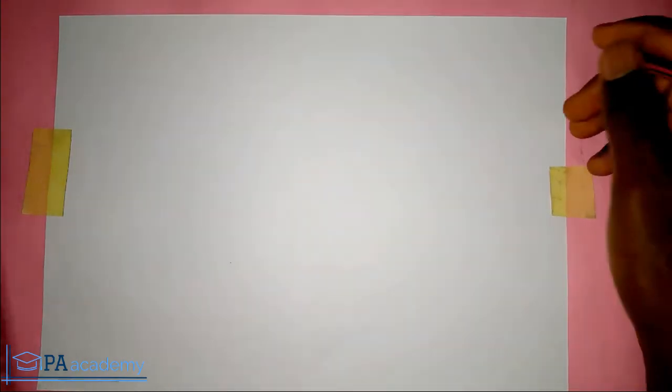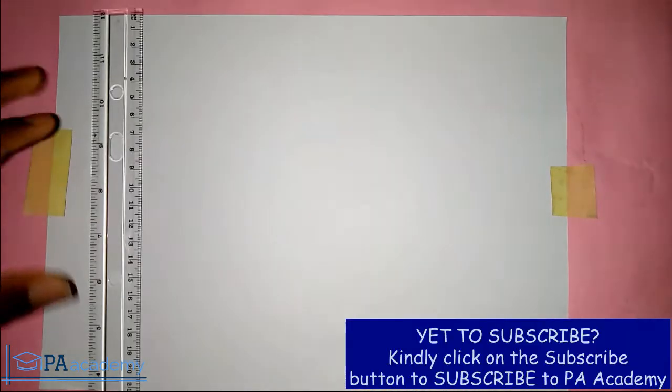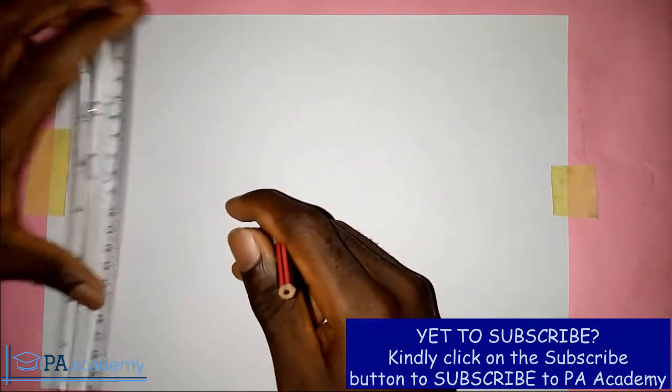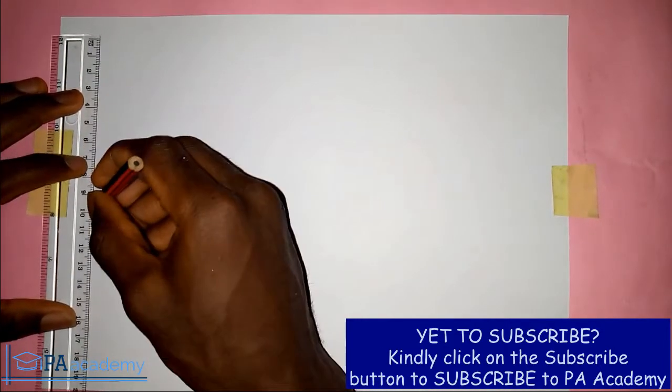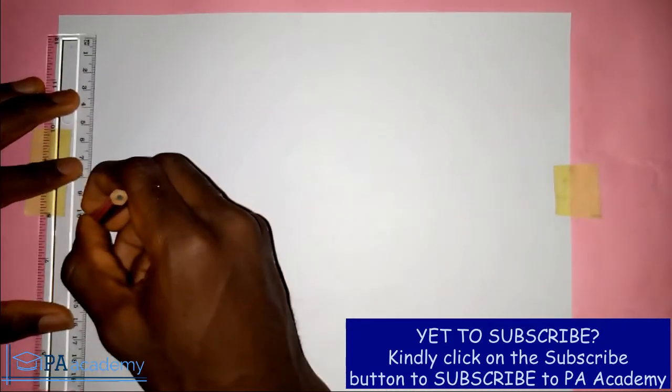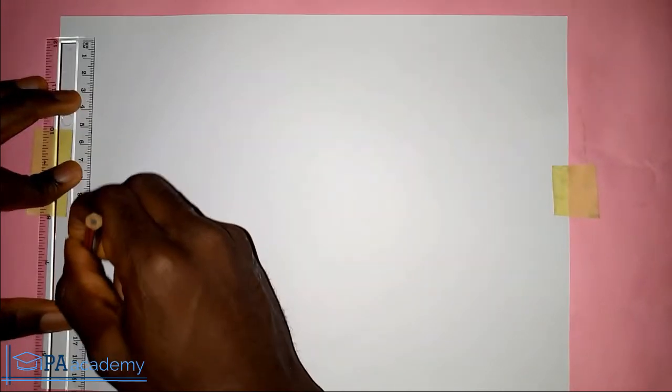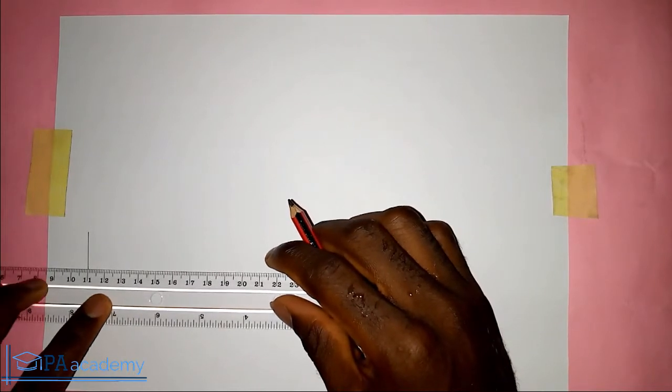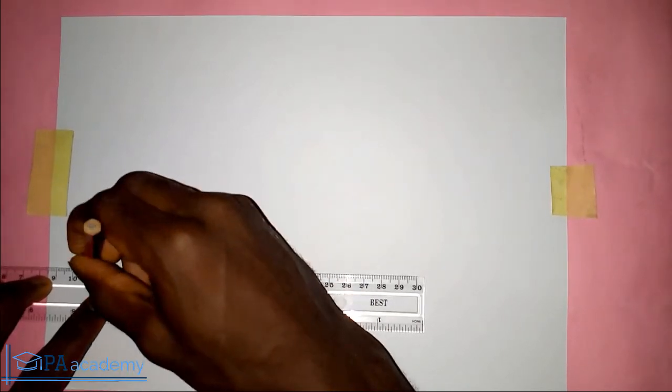Hello everyone and welcome to PA Academy. In this video I'm going to be showing you how to draw the development of a square prism. So the first thing I want to do now is to draw the square, that is the base of the square, and I'm going to be using a unit of two centimeters.